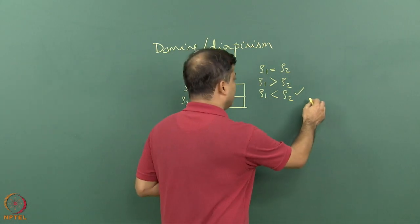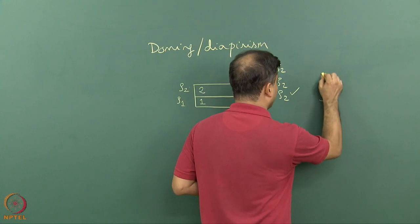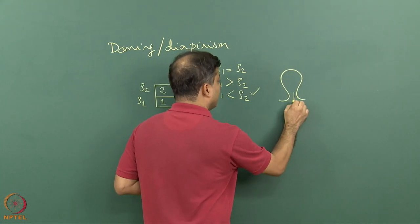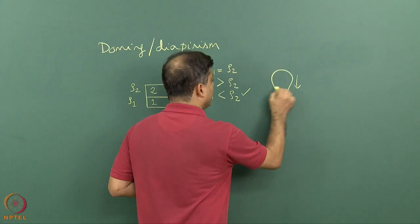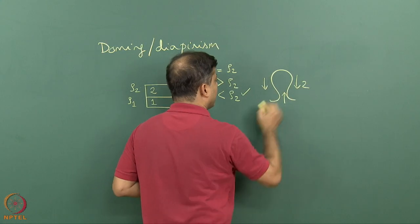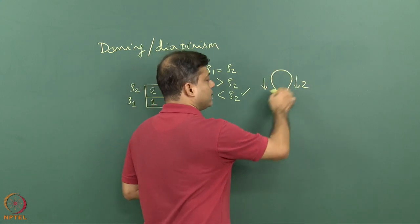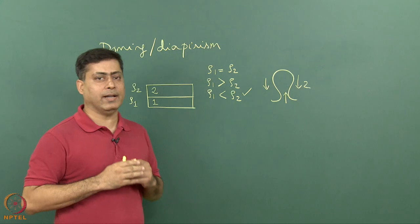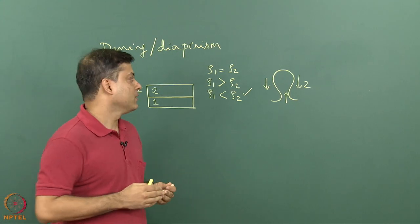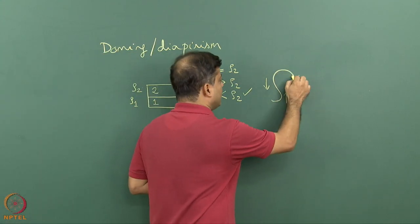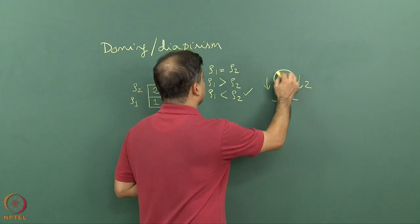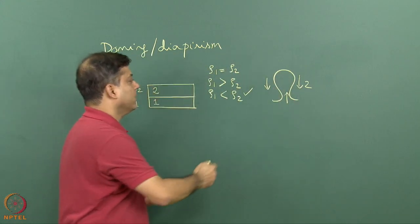So how will it look like? Fluid one will move upward and fluid two will move downward. This kind of geometry, a typical anticlinal or antiformal which is produced with domal geometry, such a structure is known as a dome or a diapir.